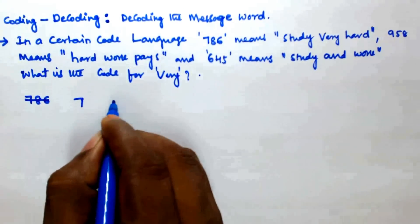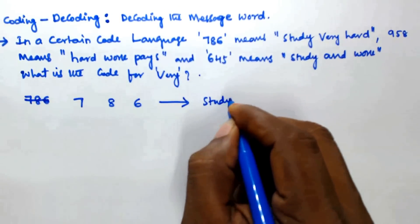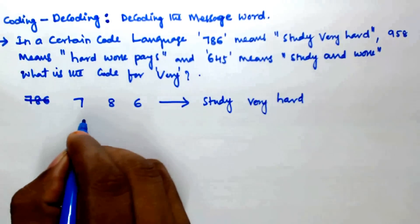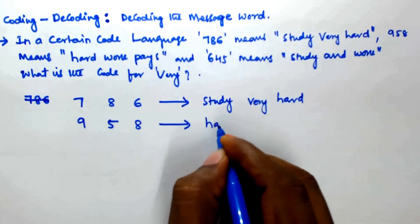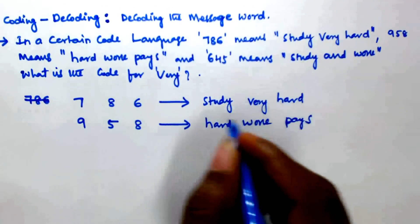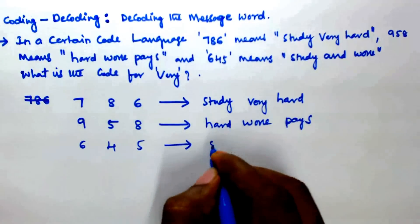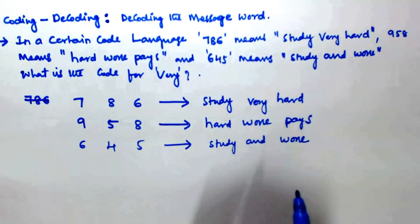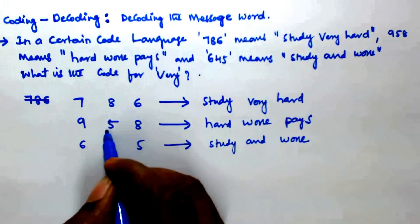Seven eight six means 'study very hard'. In the same way, nine five eight means 'hard work pace'. And in the same manner, six four five means 'study and work'. Now we can begin comparing these coded messages.